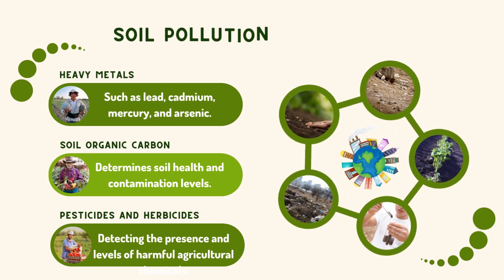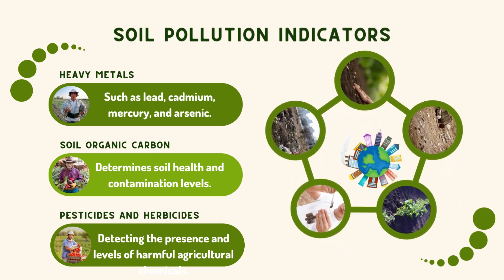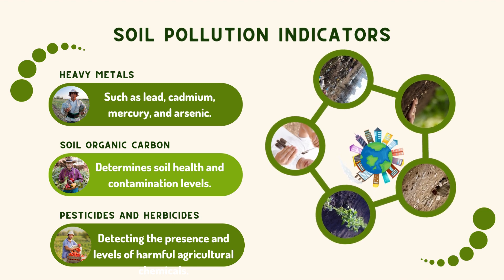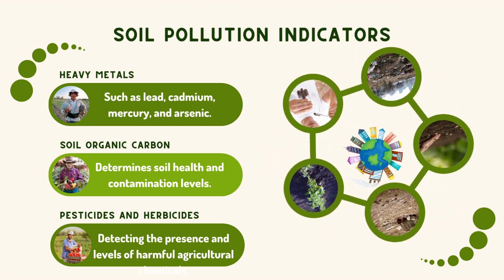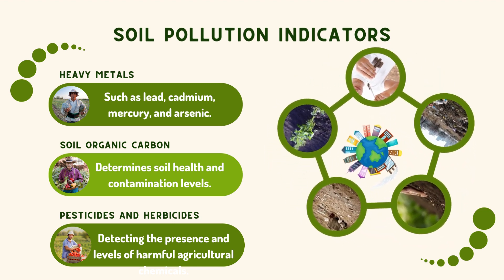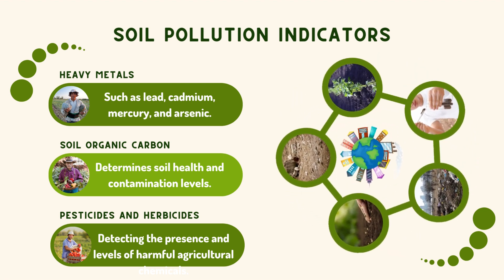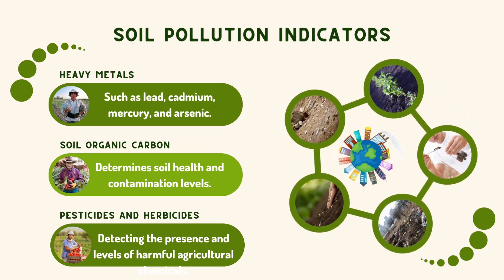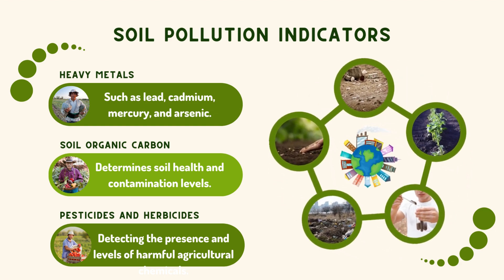When it comes to soil pollution, we pay attention to the presence of heavy metals, soil organic carbon, and harmful agricultural chemicals like pesticides and herbicides. Monitoring these indicators helps us understand the contamination levels and potential risks associated with soil pollution.